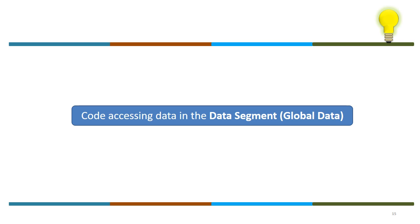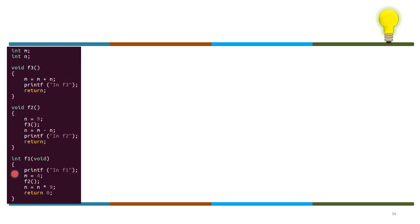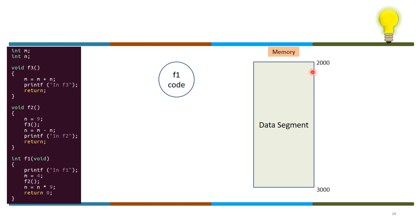Code accessing data in the data segment should be straightforward. We will see how. Here is an example where we have three functions and two global variables. Every function will have access to the global variables. We will see in animated view how a function accesses the data in the data segment.